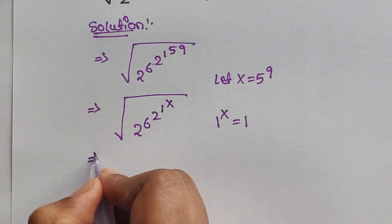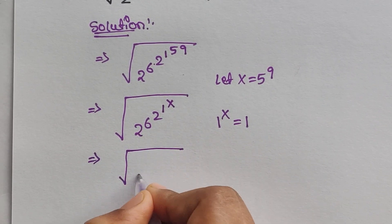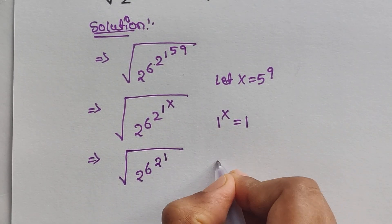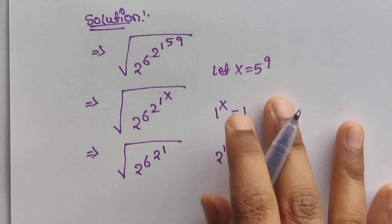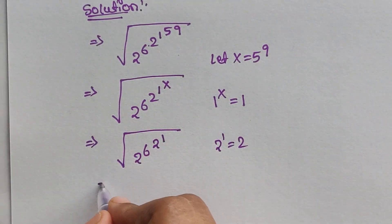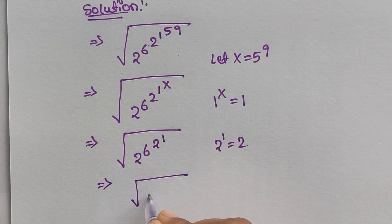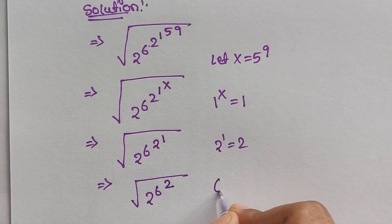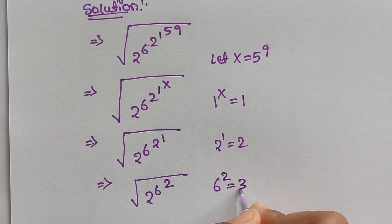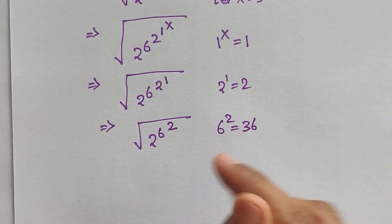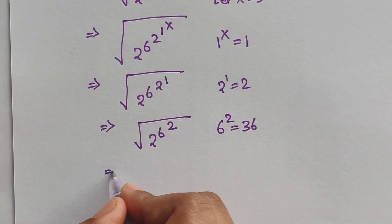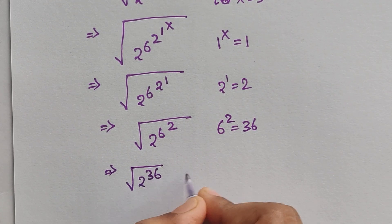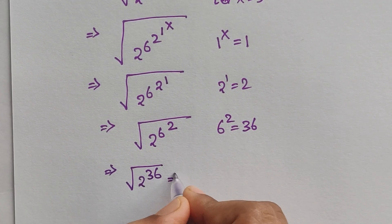Now it becomes 2^6 · 2^1, and 2^1 equals 2. So we have square root of 2^6 · 2. The exponents combine: 6 squared gives us 36, so now we have square root of 2^36.